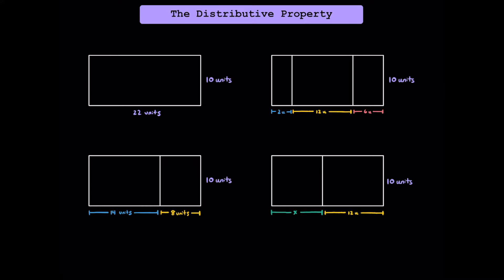Let me show you a geometric representation of the distributive property. All four of these rectangles have the same outer dimension, so the area of all of them is going to be 22 times 10, or 220 units squared. However, finding the area of each rectangle can be done differently depending on how they're split up. For the first rectangle, we simply take 10 and multiply it by 22. For the one beneath it, we could write 10 times 14 plus 8, because 14 plus 8 gives us the entire length of 22. We could also find the area of the two smaller rectangles: 10 times 14 and 10 times 8.